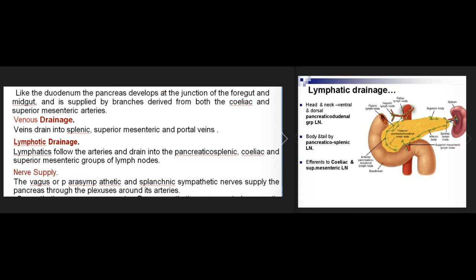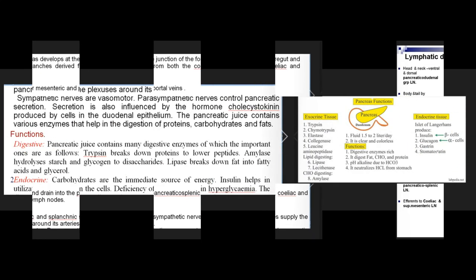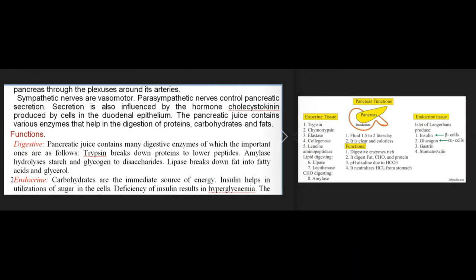Nerve supply: the vagus (parasympathetic) and splanchnic (sympathetic) nerves supply the pancreas through plexuses around its arteries. Sympathetic nerves are vasomotor; parasympathetic nerves control pancreatic secretion. Secretion is also influenced by the hormone cholecystokinin produced by cells in the duodenal epithelium. The pancreatic juice contains various enzymes that help in the digestion of proteins, carbohydrates, and fats.